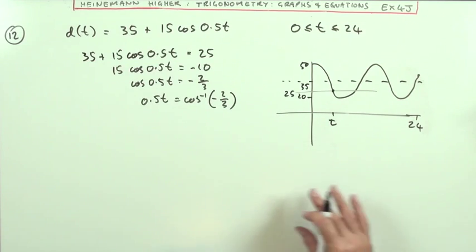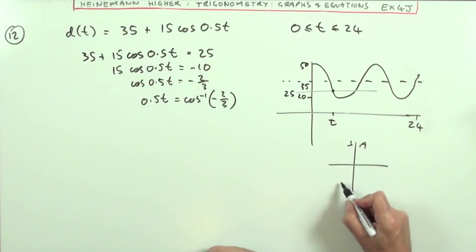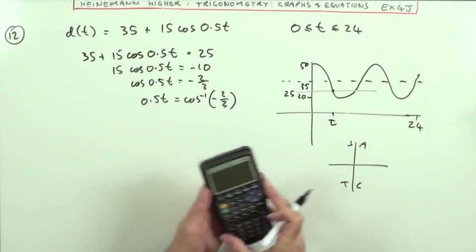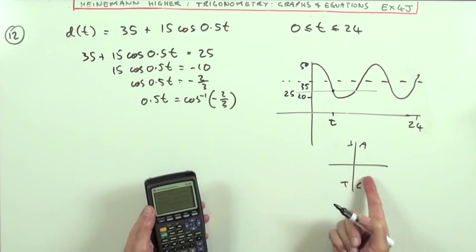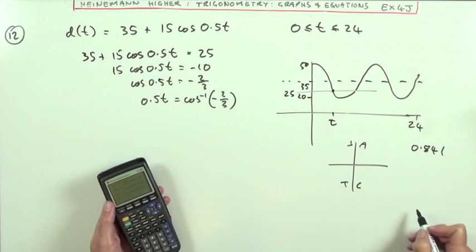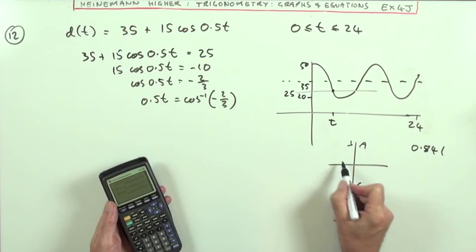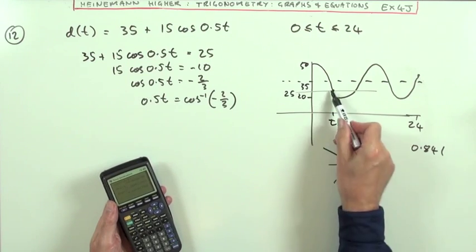So make sure it's set to radians. So I'll use my CAST diagram for that. All sine tan cos. And if I do inverse cos of the two thirds, let the negative get taken care by the diagram, I get 0.841 radians, where the cosine is negative. So that'll be there or there. And of course, those are those two positions there.